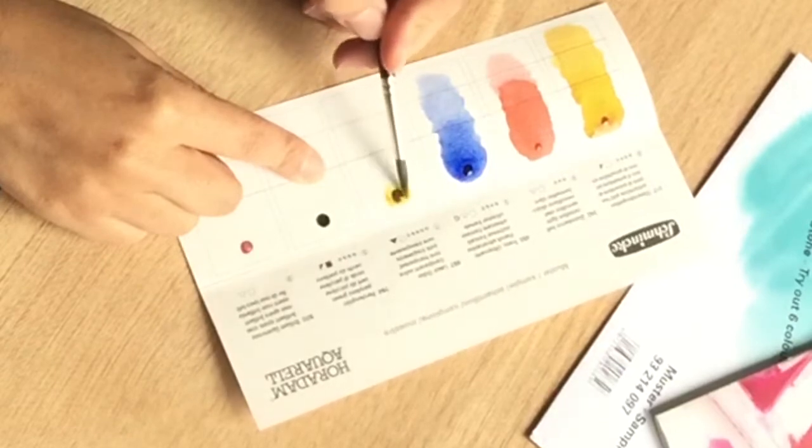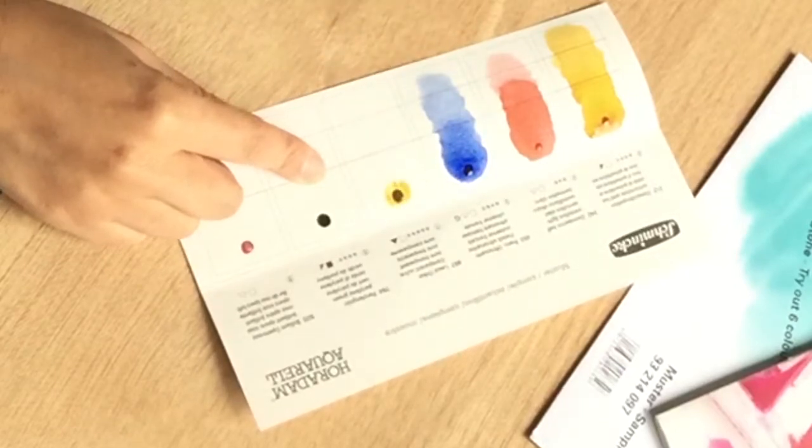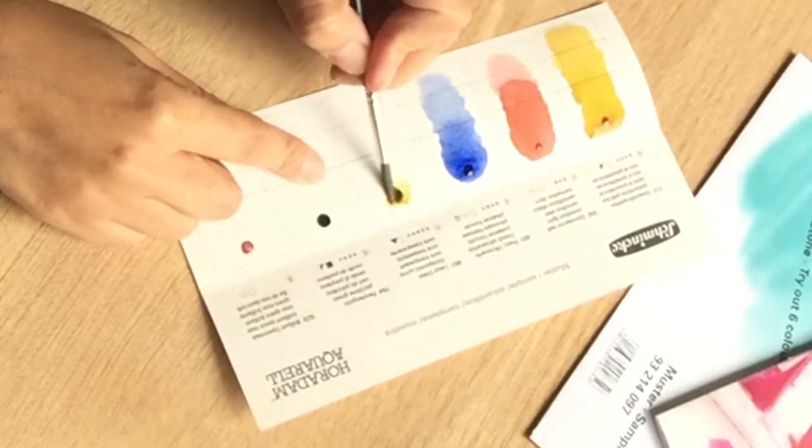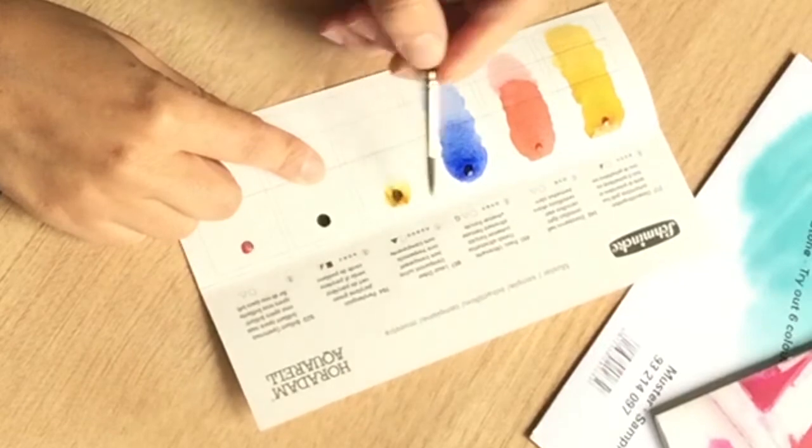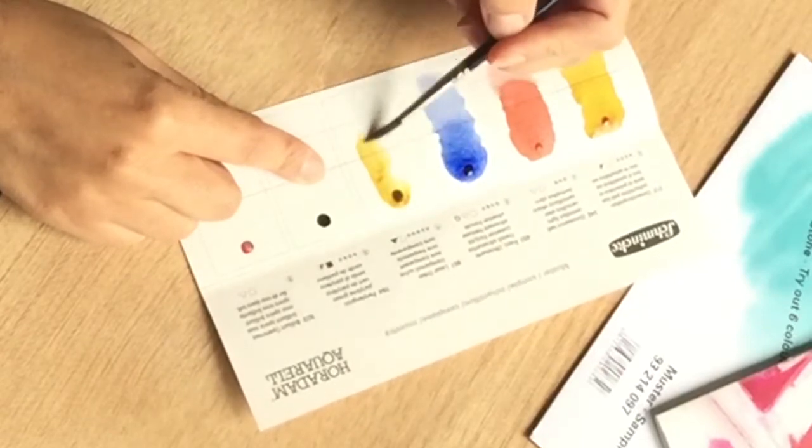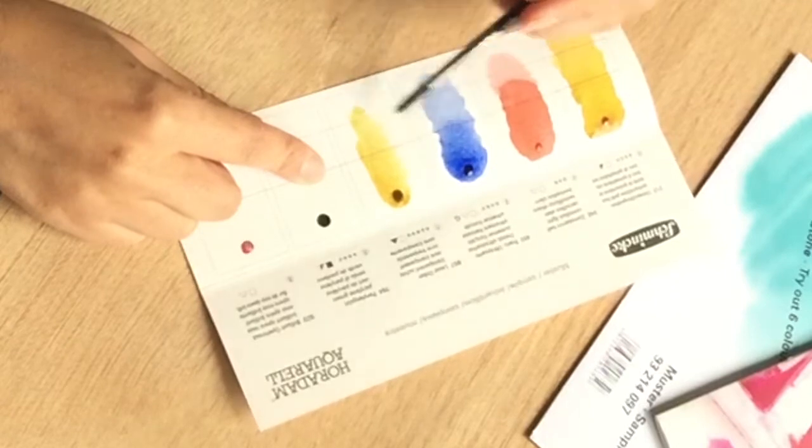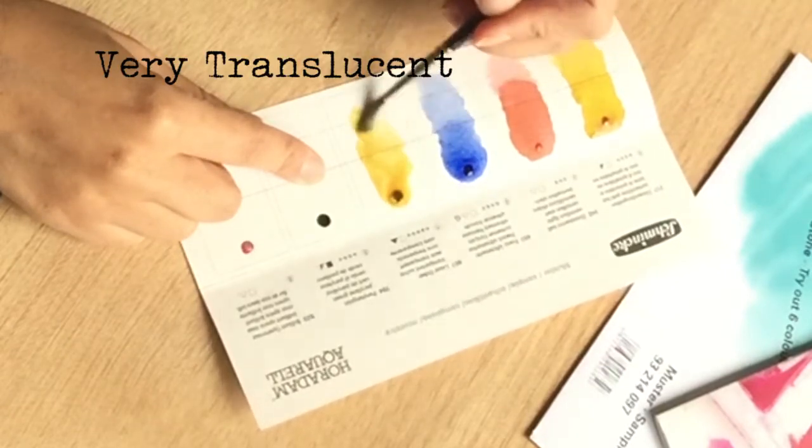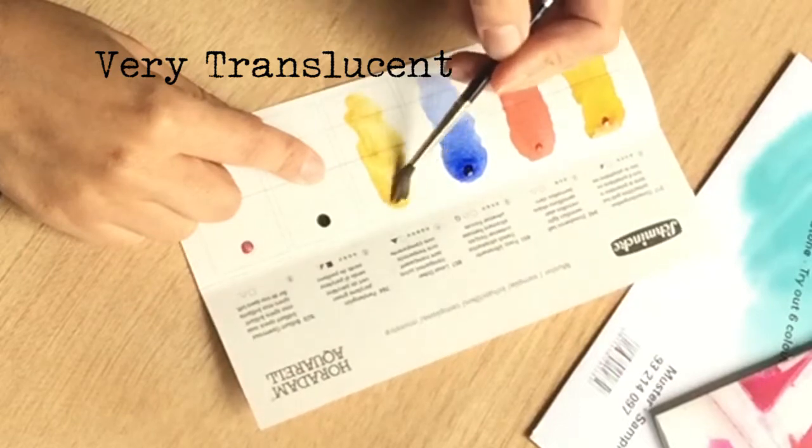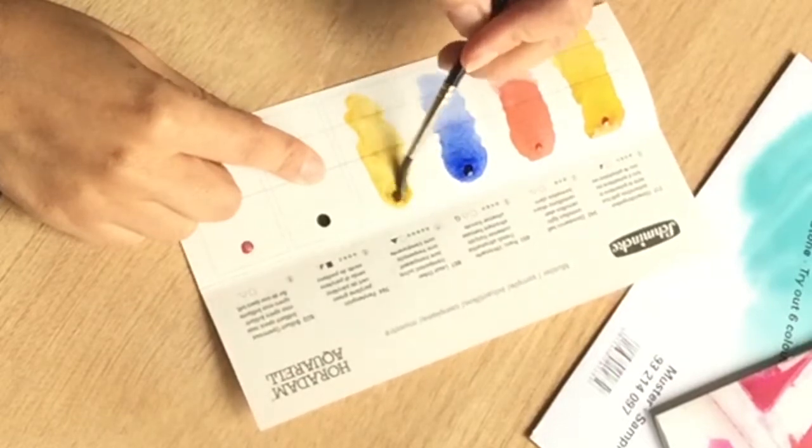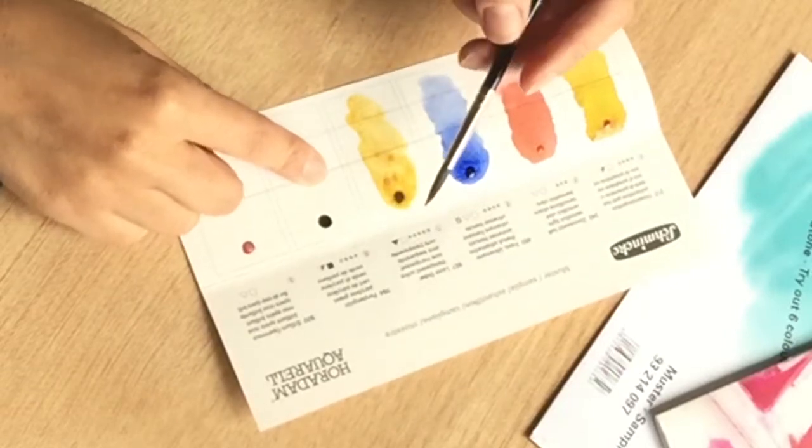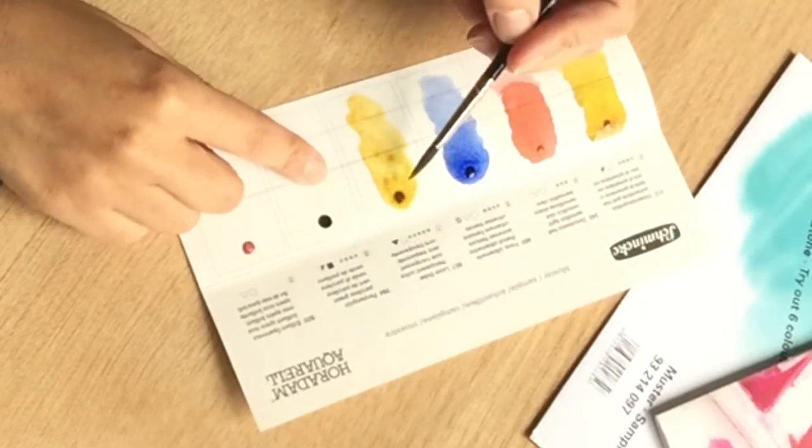It doesn't re-wet as easily as the Quinacridone Gold. Oh my god, this is going to take me a little while. Transparent Ochre. Do I have an ochre? I have a yellow ochre.